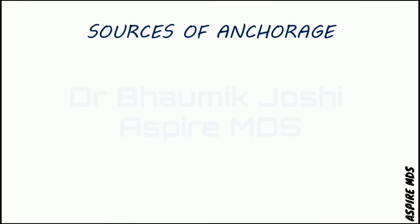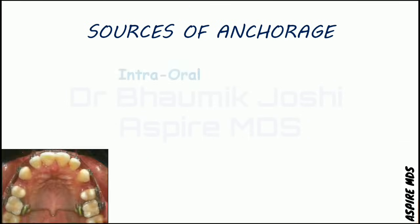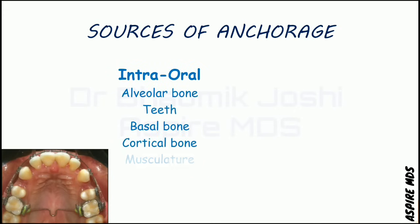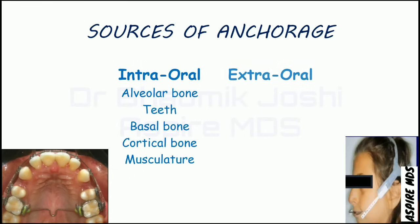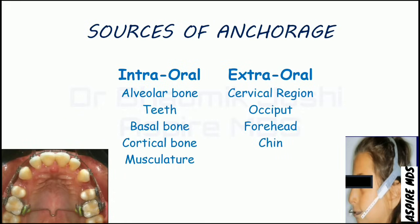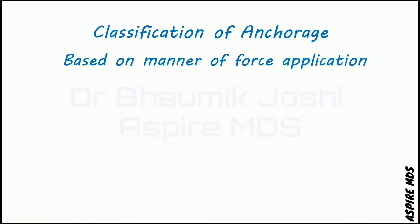Sources of anchorage can be intraoral or extraoral. The intraoral sources include the alveolar bone, teeth, basal bone, cortical bone, and musculatures. Whereas the extraoral sources include the cervical region, occiput, forehead, or chin. You get anchorage from these extraoral regions.